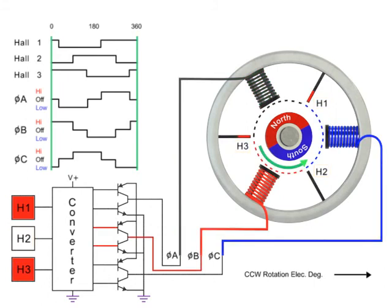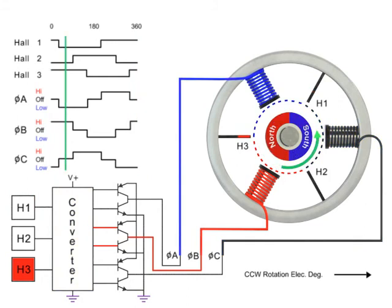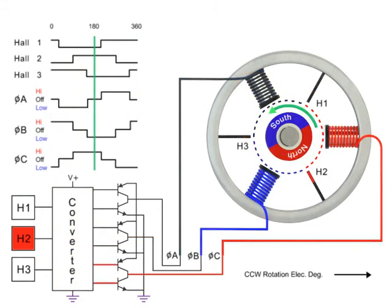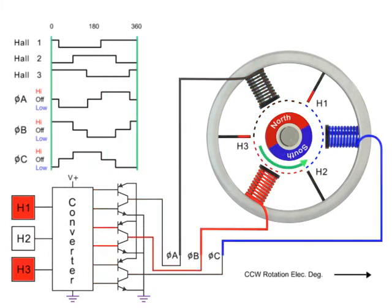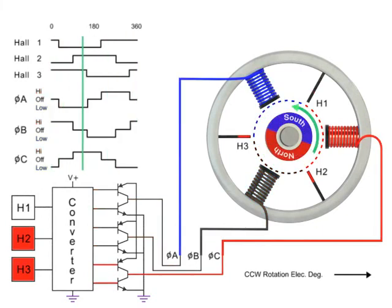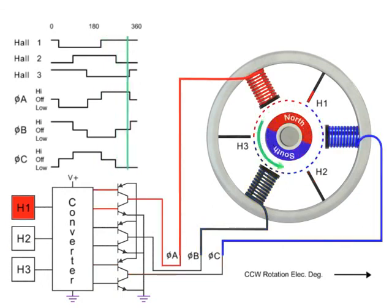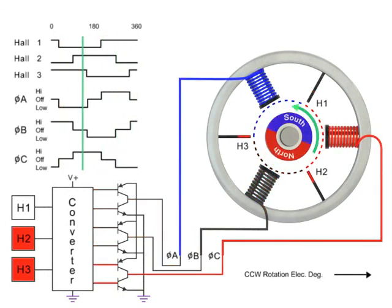Coils are energized by the converter. The coils alternate in order, creating the magnetic field to turn the rotor. The sequence is repeated with the next set of Hall effect sensors and coils to continue rotation.